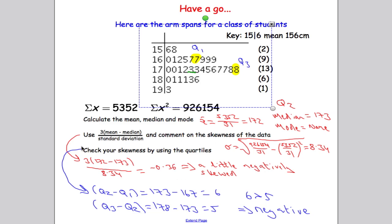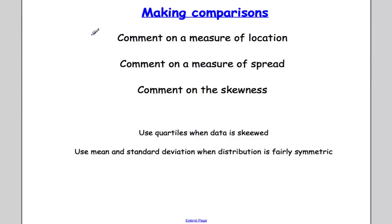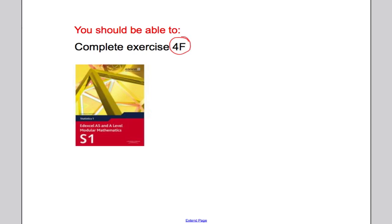Just a couple of things to note when you're making comparisons: always comment on a measure of location or an average, always comment on a measure of spread or dispersion—most often you're going to use the standard deviation. Comment on the skewness, we've talked about that in the video, and literally when you're commenting on the skewness, just say if it's positive, negative, or symmetric. For commenting on the skewness, you use quartiles when the data is skewed and the mean and standard deviation when the distribution is fairly symmetric. That's all from me. Hopefully you found the video useful. We'll be back with a new tutorial soon. Best of luck with revision, and I'll talk to you again sometime. Oh, and you should be able to now do exercise 4F from the textbook. Bye for now.